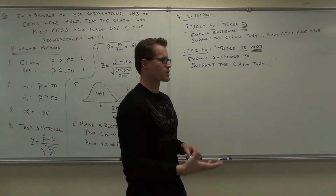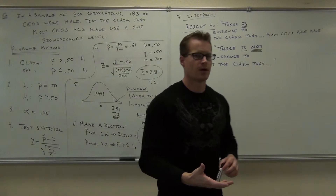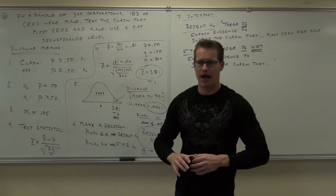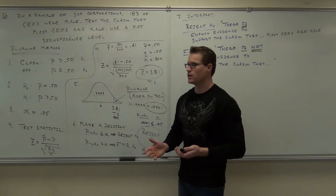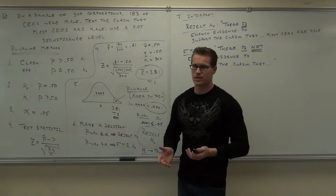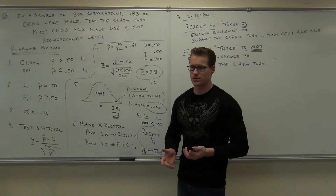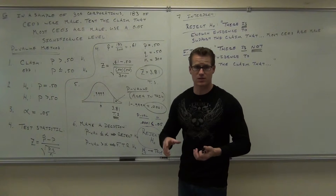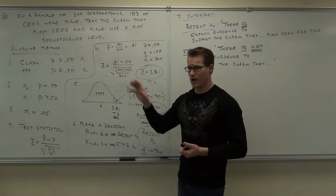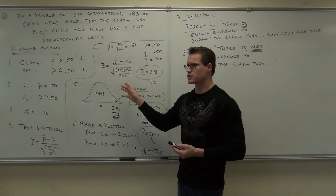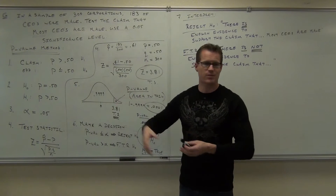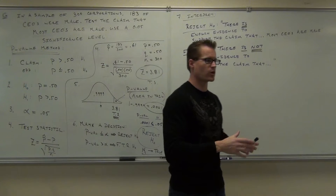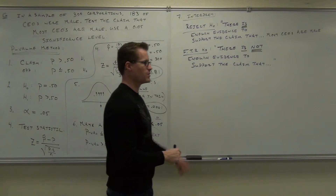That's all there is to it. If you can grasp this concept, then you have hypothesis testing down. In the next two sections, 7.4 and 7.5, all we're going to be dealing with is means rather than proportions. But this is the idea — these are the same seven steps no matter what you do for the P-value method.